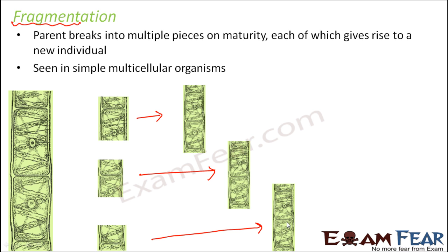Why is fragmentation not possible for complex multicellular organisms? Because in complex multicellular animals, cells are organized and specialized to form specific tissues which perform specific functions. Those tissues form organs, and organs form organ systems. So fragmentation by simple cell division is not possible for complex multicellular organisms, which have advanced modes of reproduction instead.